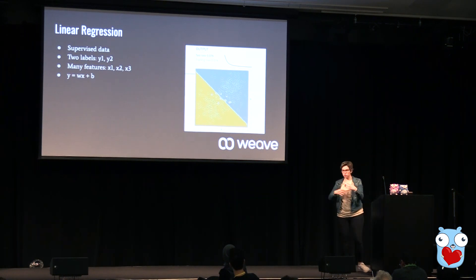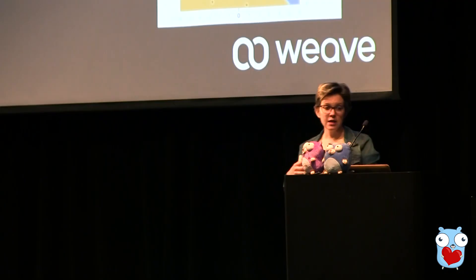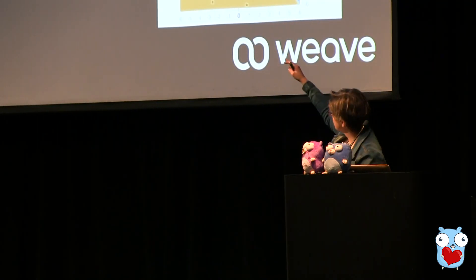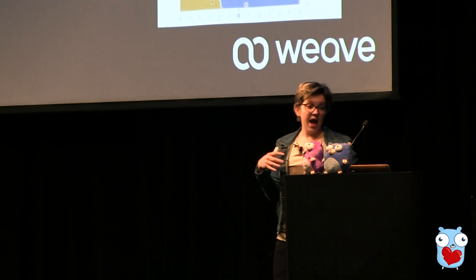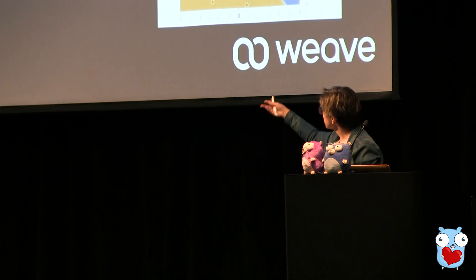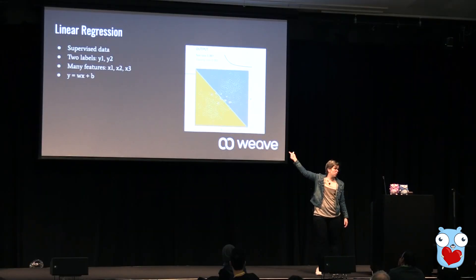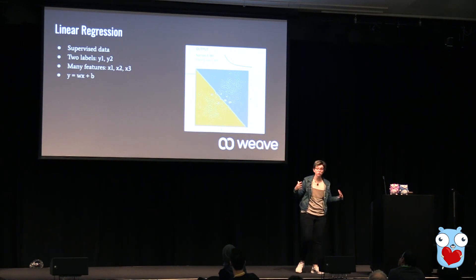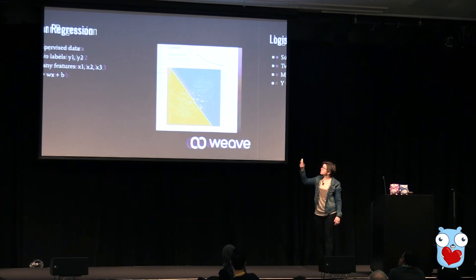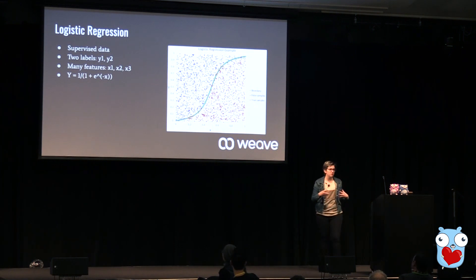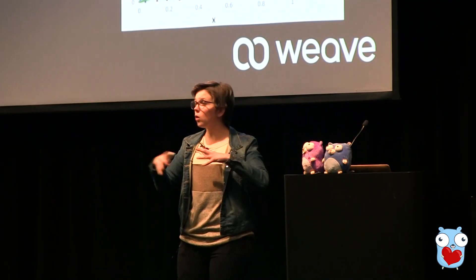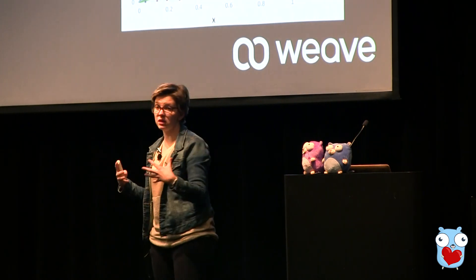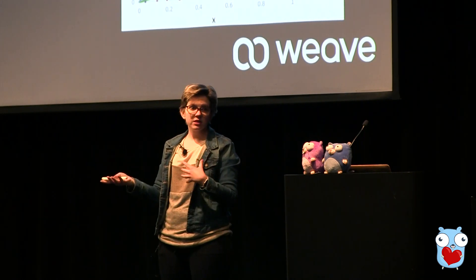This data is always supervised — we're trying to determine what the data means. It can have two labels, such as blue and orange, and there can be many features as to why those labels are true, and then we get our line. This right here is an example from TensorFlow Playground of how models are trained. Essentially a random line is picked, and then that line changes until it becomes most accurate. That's how these models are trained, based on randomness and then minimizing the error. Logistic regression is the exact same thing as linear regression except it's a different shaped line — quadratic, cubic, hyperbolic tangential, whatever kind of line fits.